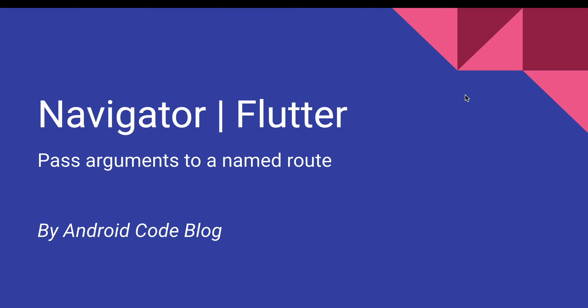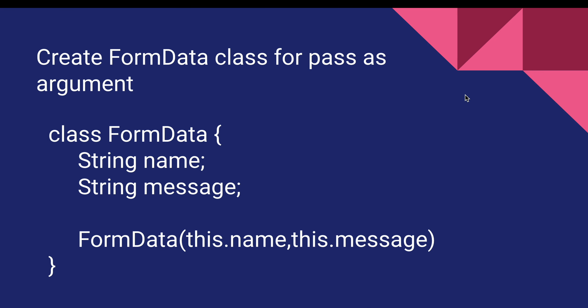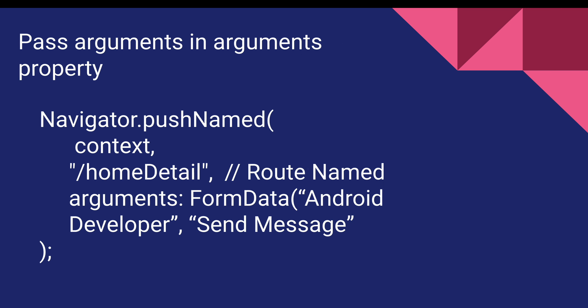In this video, I will give a quick example about how to pass the argument from one screen to another screen by the route name. In this process, we first define the FormData class, which will be passed from one screen to another and send it over the argument property of the navigator.pushNamed method.